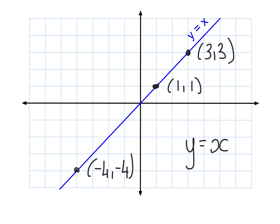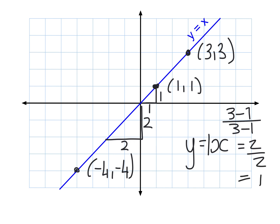As we start to add things in front of the x or after the x, this line will change and move. In class I would show this on a graphics calculator, but today I'm doing it by a series of images. The blue line y equals x will be here for all these slides — remember, there's a secret number 1 in there, so the gradient of this line is 1. If I take any little triangle and do vertical over horizontal, I get gradient 1.